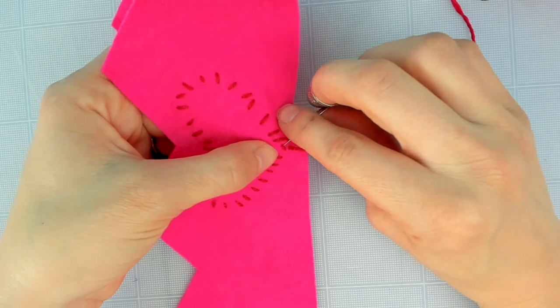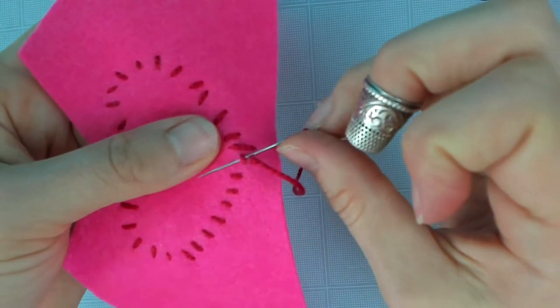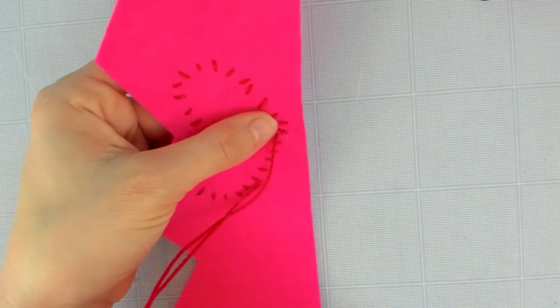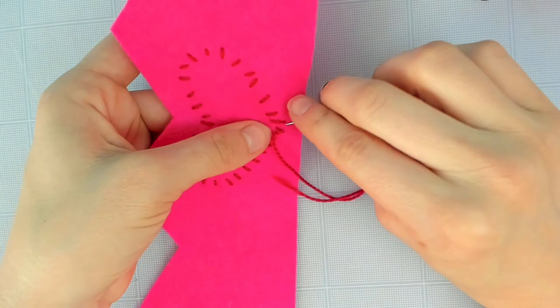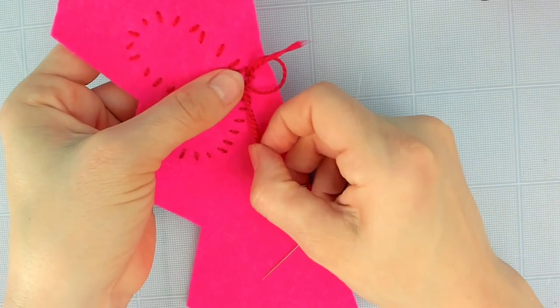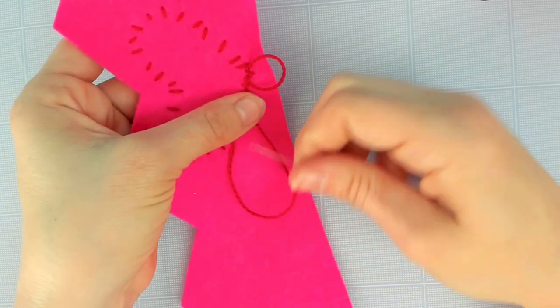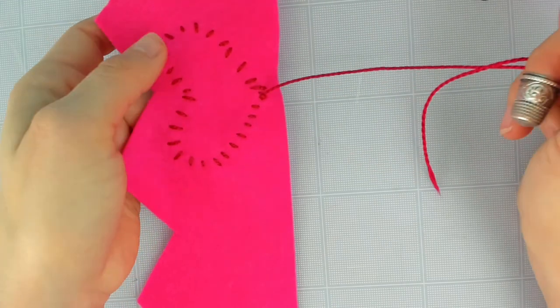Now I can just tie a knot. My favorite way is to grab one of these little stitches back here. Same method where I just put my needle underneath. Go under it once, twice, and on the third one, I go through this loop. And pull tight. And that's a nice strong knot.